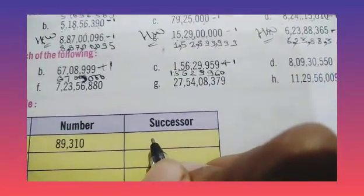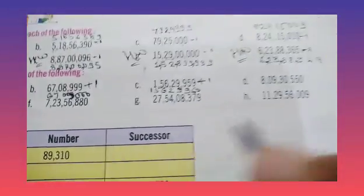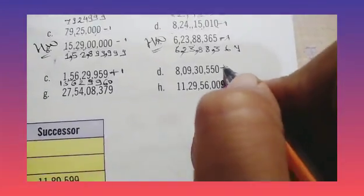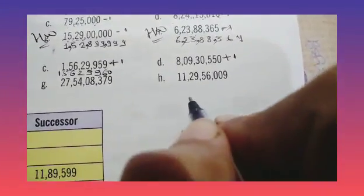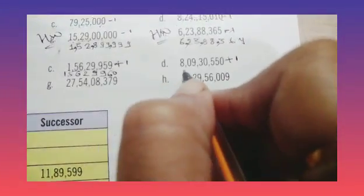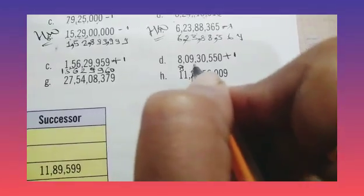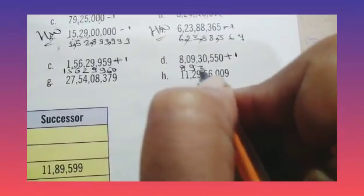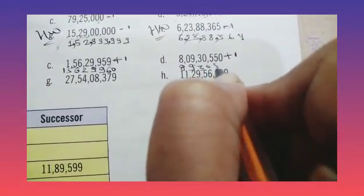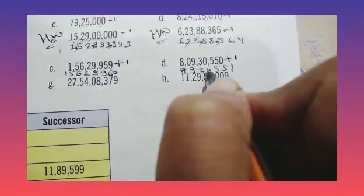Okay? Now part D is here. If we add one number, it becomes 8 crore 9,30,551.